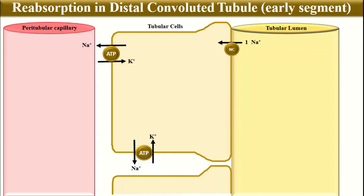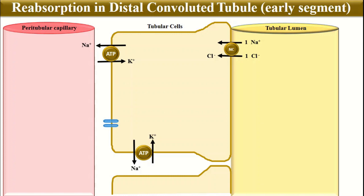The reabsorption of sodium leads to co-transport of one chloride ion along with sodium. Because one positive ion is reabsorbed with one negative ion into the tubular cell, this reabsorption is called electro-neutral. The chloride ion reabsorbed into the tubular cell is then taken up into the interstitium via chloride transporters or chloride channels located on the basolateral side, and is ultimately reabsorbed into the peritubular capillaries.